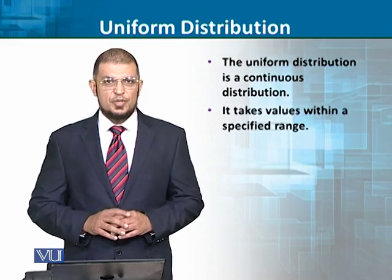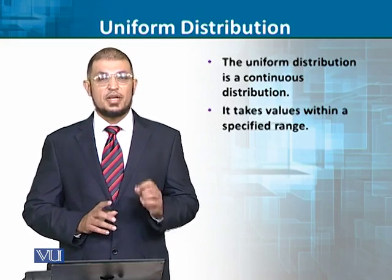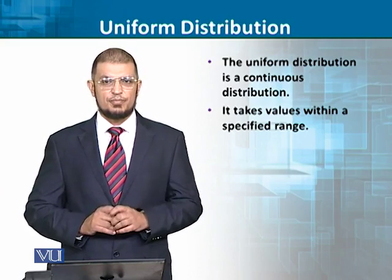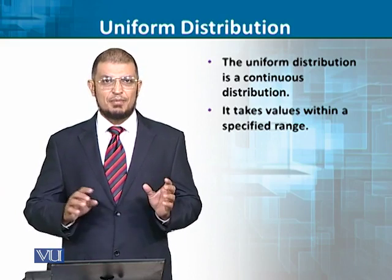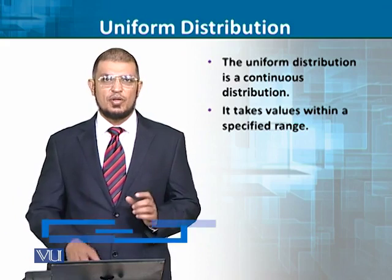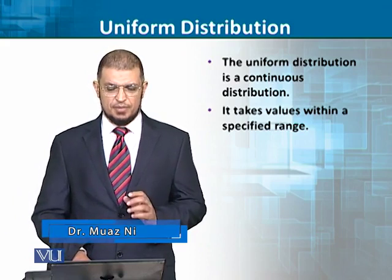Uniform distribution is not discrete — it is a continuous distribution. This means that it takes a certain range of values and gives it.